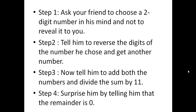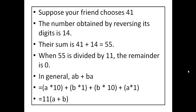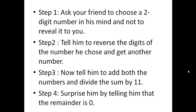Let's see how this trick works. Suppose your friend chose 41. Reversing its digits gives 14. Their sum is 41 plus 14 equals 55. When 55 is divided by 11, the answer is 5 with no remainder — the remainder is 0. Since 55 is a multiple of 11, we can confidently tell him the remainder is 0.